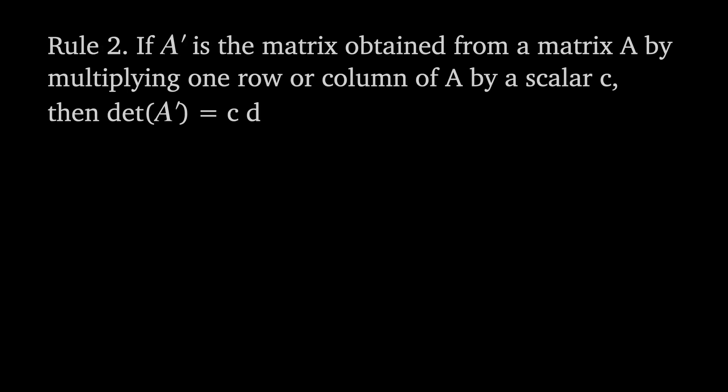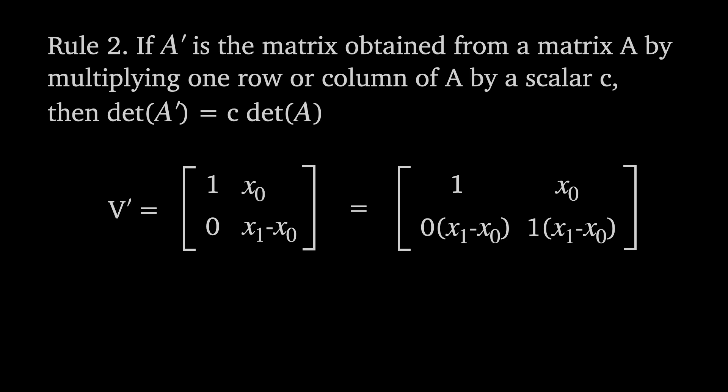The second rule is that if A' is a matrix obtained from a matrix A by multiplying one row or column of A by a scalar C then the determinant of A' is equal to C times the determinant of A. That is if the entries of a row or column share a common factor we can take that factor outside the determinant calculation. For example we can now see row 2 has this common factor of x sub 1 minus x sub 0 although the first element is 0 times this factor. Using rule 2 this determinant becomes x sub 1 minus x sub 0 times the determinant of the same matrix with the factor x sub 1 minus x sub 0 removed from row 2. Again the determinant is still x sub 1 minus x sub 0.